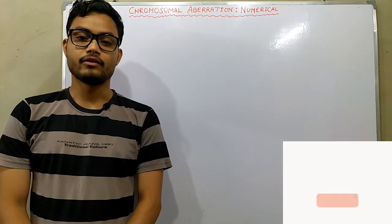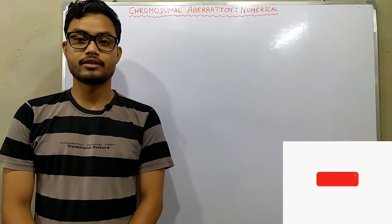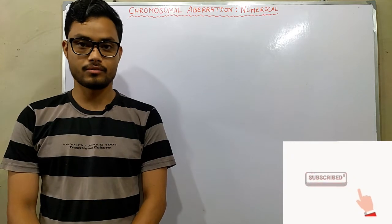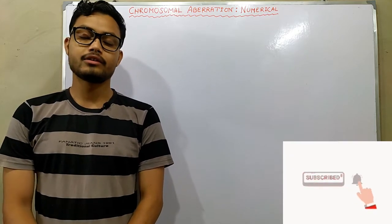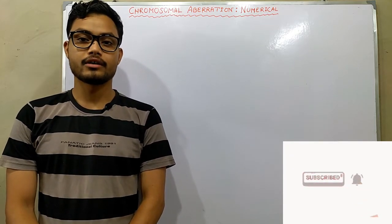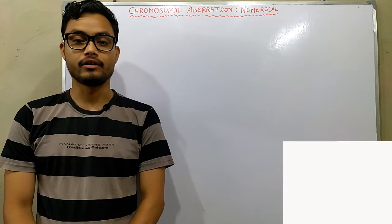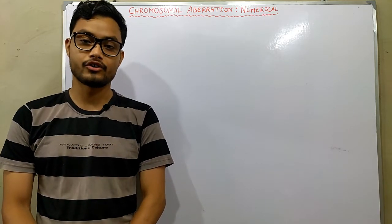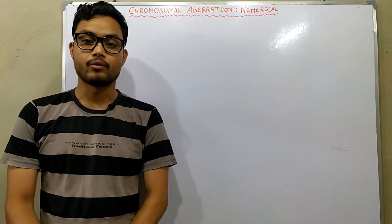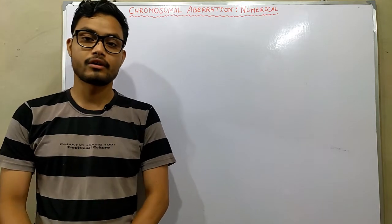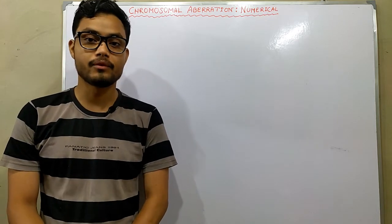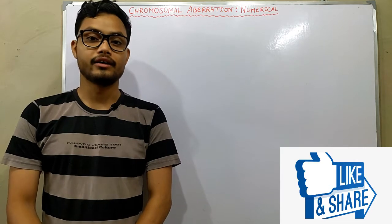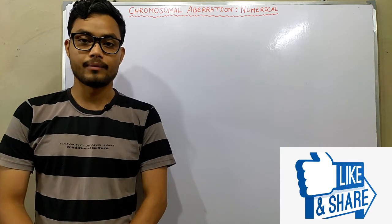In my previous video I already discussed about chromosomal aberration — specifically structural chromosomal aberration. Now in this video I am going to discuss about chromosomal aberration in the case of numerical aberration: what numerical aberrations are, what are the basis of numerical aberration, what types of numerical aberrations exist, and all of the basic parts regarding numerical aberration.